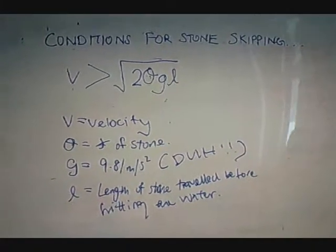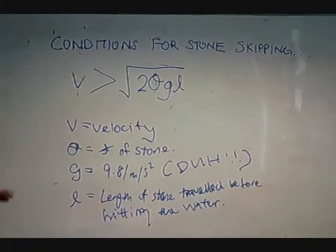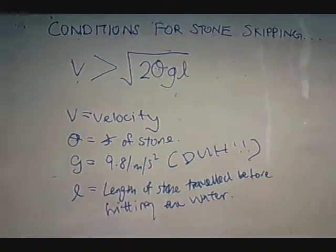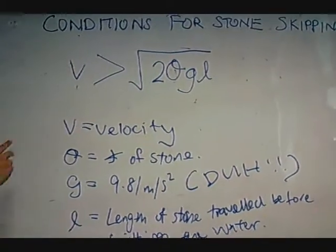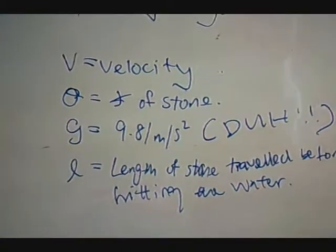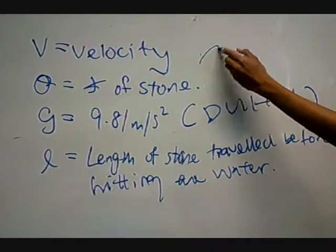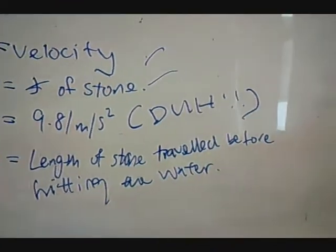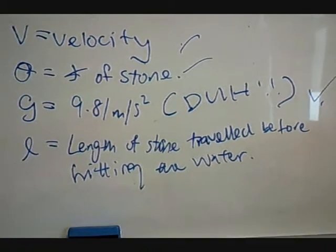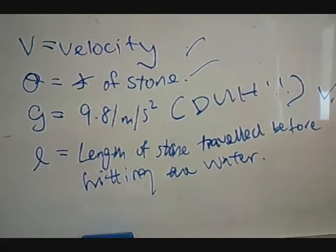So, in this case, there must be one common condition that needs to be fulfilled, whereby the velocity of the stone must be bigger than the square root of 2θgℓ, whereby V equals the velocity, θ equals the angle of the stone entering the water, g equals 9.8 m/s², and ℓ equals the length of the stone traveled before hitting the water.